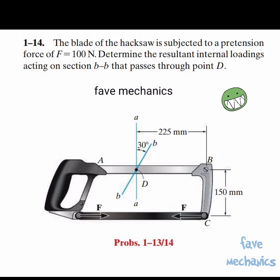The blade of the hacksaw is subjected to a pretension force of F equals 100 Newton. Determine the resultant internal loadings acting on section B to B that passes through point D.